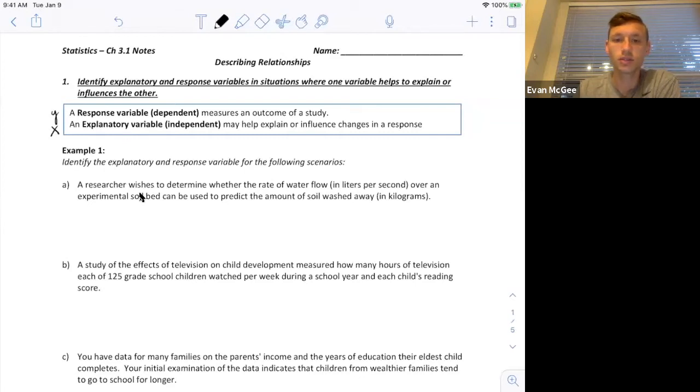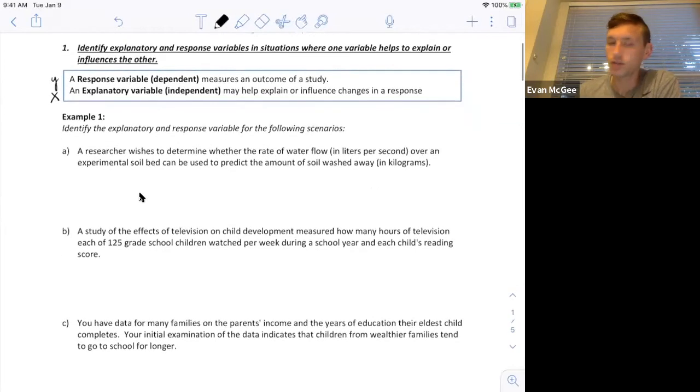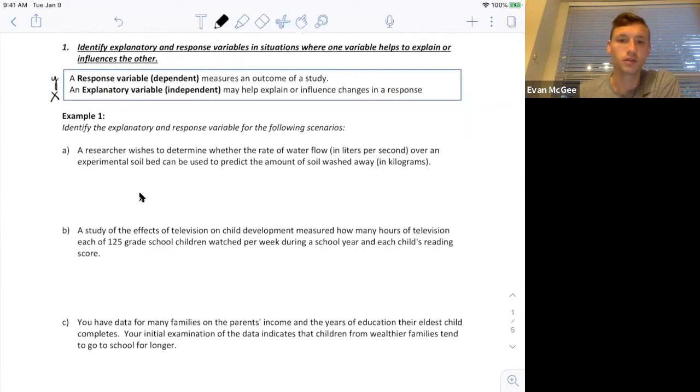So let's look at three examples and identify the explanatory and response variables from these scenarios. A researcher wishes to determine whether the rate of water flow over an experimental soil bed can be used to predict the amount of soil washed away. So which one is responding? The amount of soil being washed away is responding to the rate of the water flow.